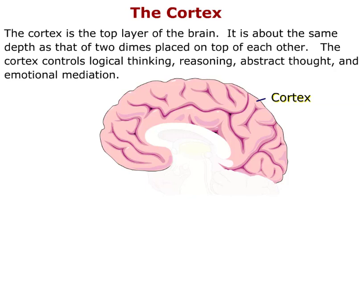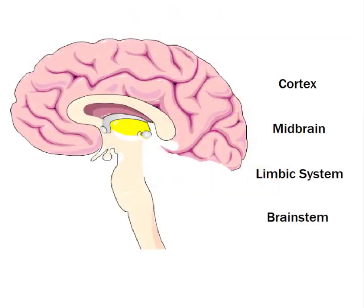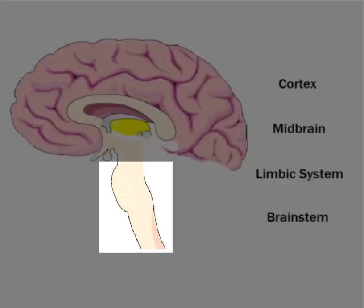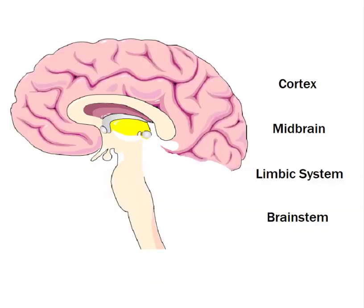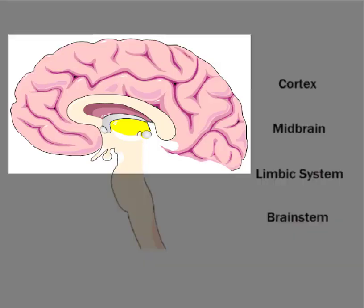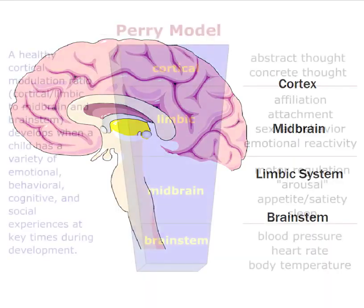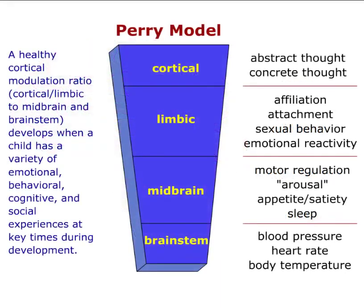The cortex controls logical thinking, reasoning, abstract thought, and emotional mediation. So from the bottom up, the parts of the brain are the brain stem, the midbrain, the limbic system, and the cortex.